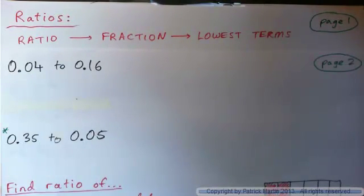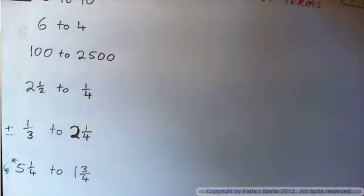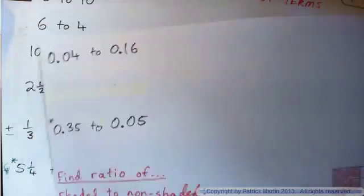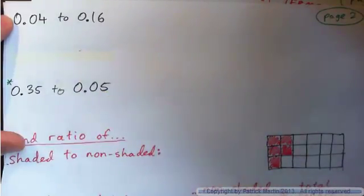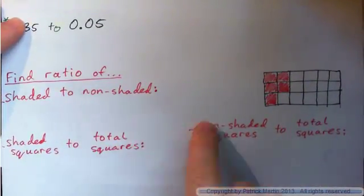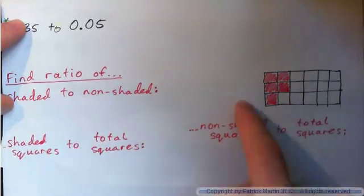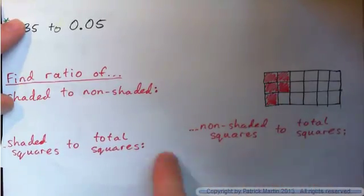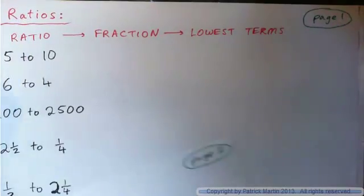In this video we're going to have a look at ratios. Here's page 1 with these examples, and here's page 2, and we'll do these examples, finishing up with finding the ratio of shaded to non-shaded squares. Okay, so let's start.